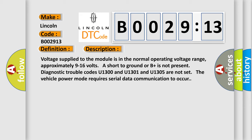Voltage supply to the module is in the normal operating voltage range, approximately 9 to 16 volts. Short to ground or B plus is not present. Diagnostic trouble codes U1300, U1301, and U1305 are not set. The vehicle power mode requires serial data communication to occur.